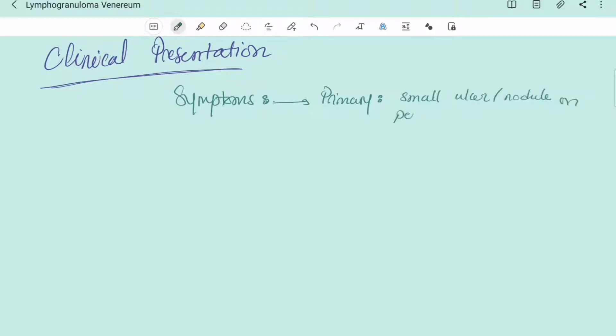The primary symptoms of lymphogranuloma venereum are a small ulcer or nodule on penis or anus that may go unnoticed, and proctitis.